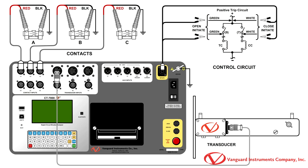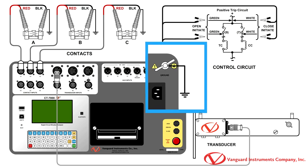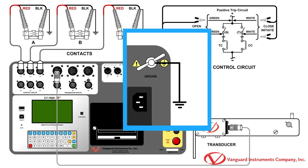We'll be making cable connections per the connection diagram shown here. First, start by connecting the CT7000 S3's ground terminal to the substation ground.